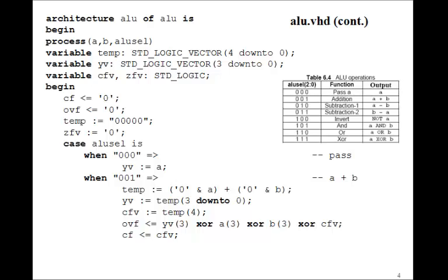Here's the architecture for the ALU. We'll have a process with A, B, and ALU Select in the sensitivity list. We'll define variables: a 5-bit temp used for addition and subtraction, a Y variable, carry flag variable, and zero flag variable. We'll initialize the carry flag and overflow flag to 0, temp to 0, zero flag variable to 0. And then we'll have the case statement, ALU Select.